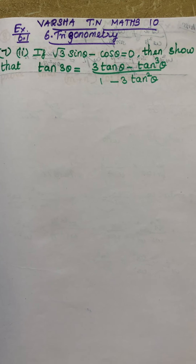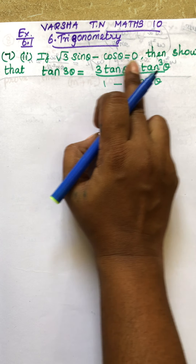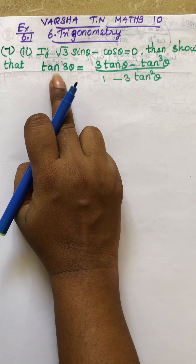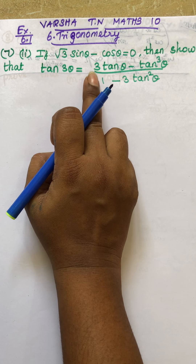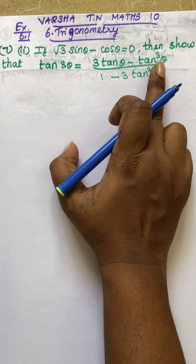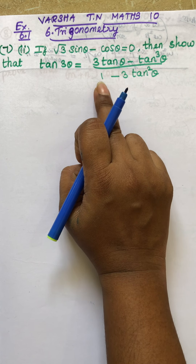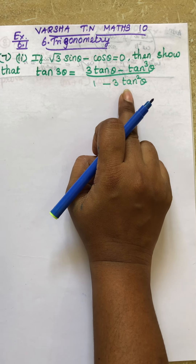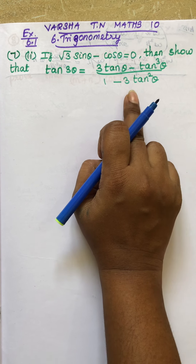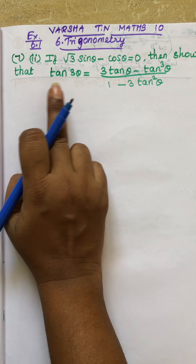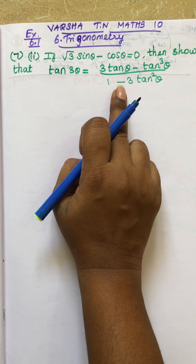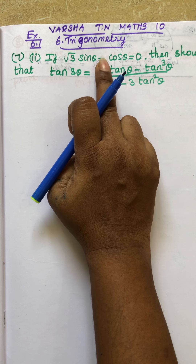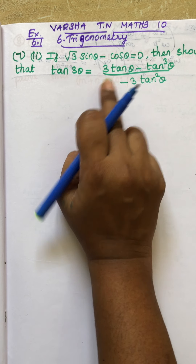If you are given one statement, then you have to show that tan 3θ equals 3 tan θ minus tan cube θ, divided by 1 minus 3 tan square θ. This is your question. Here we are going to prove LHS equals RHS. If you are given one statement, you have to prove that statement.